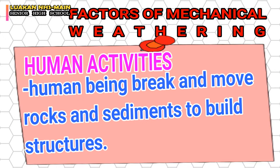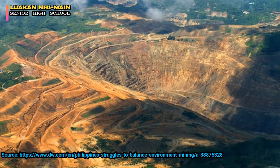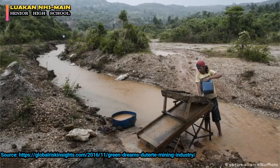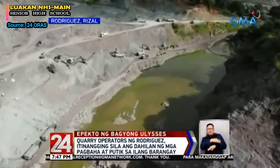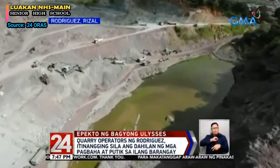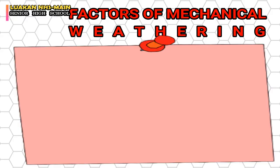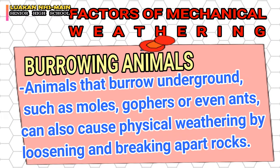The next factor is human activities. Human beings break and move rocks and sediments to build structures. Human activities — from mining to quarrying to the smallest activities we do on the surface of the earth — can break or reduce the size of pieces of rock. The last factor is burrowing animals. Animals that burrow underground, such as moles, gophers, or even ants, can cause physical weathering by loosening and breaking up parts of rocks.